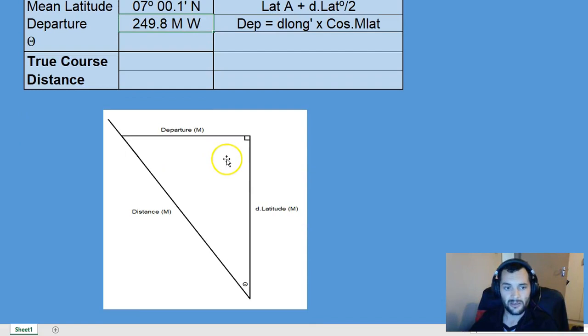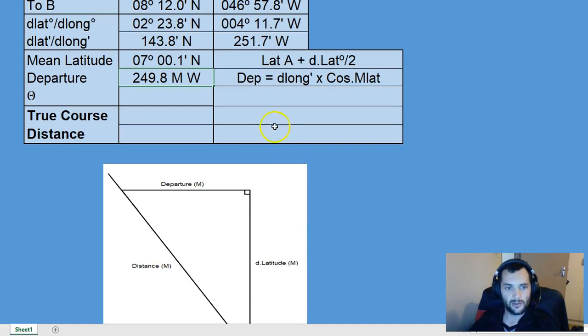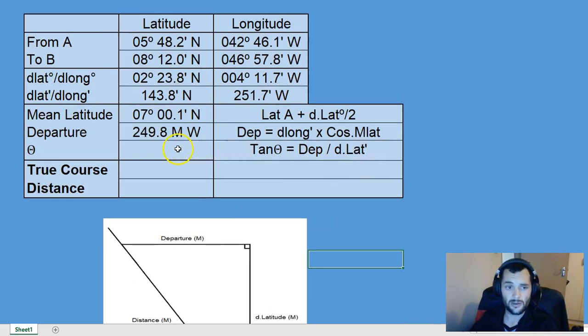All we've got to do now is find the course angle. Tan theta, the tangent of theta, will be equal to departure divided by d latitude, opposite over adjacent. That's exactly what we're going to do. Tan theta equals departure over d latitude. That gives us a theta value of 60.07 degrees.